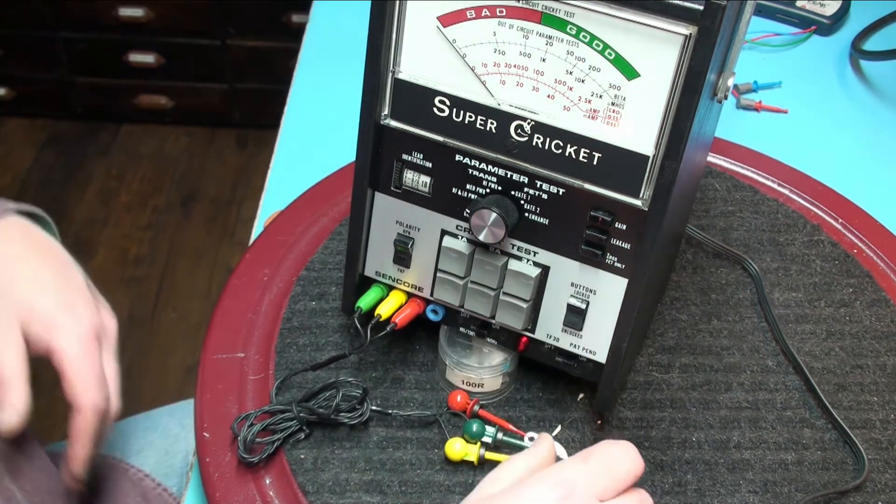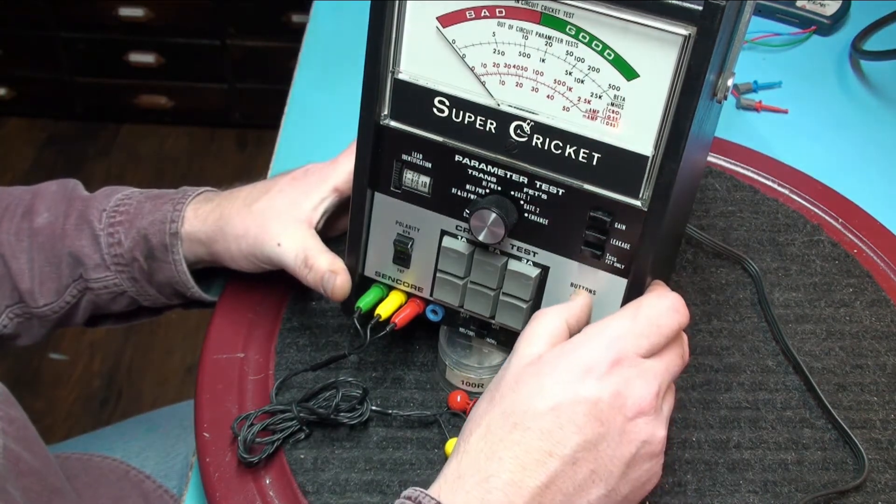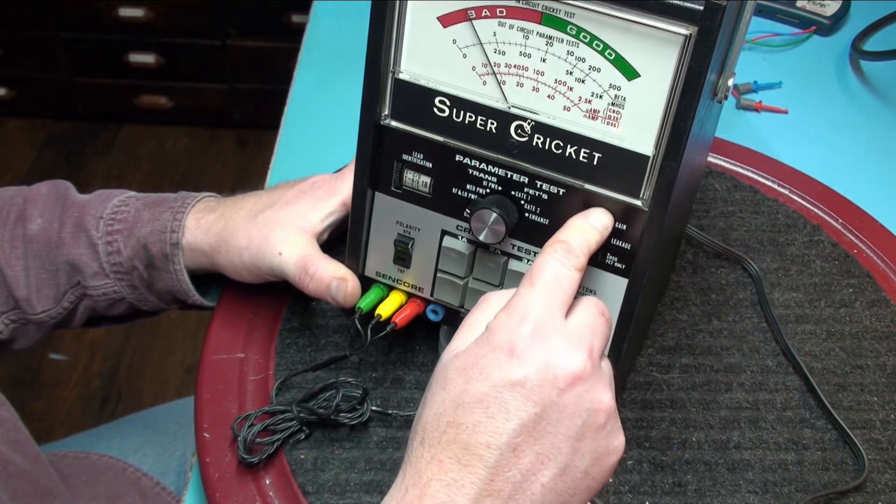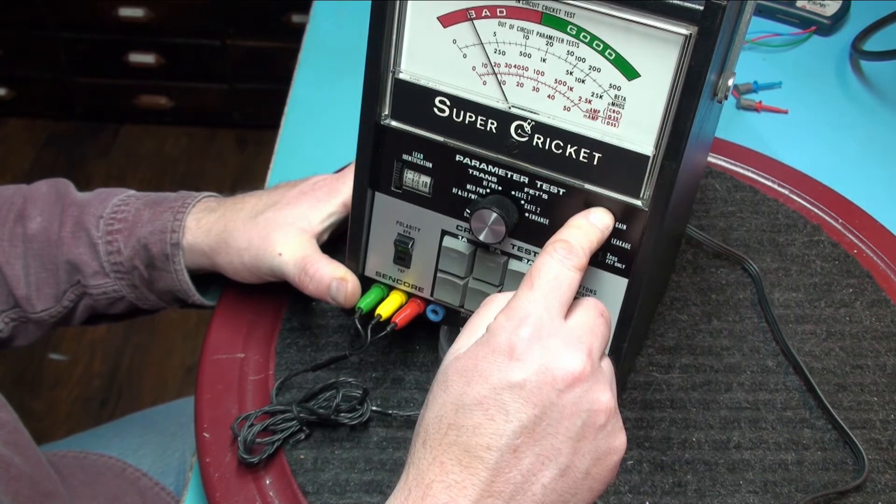So to do that we are going to lock the buttons. I am going to push 2A and then the gain button. So we have a gain of about 3.5.